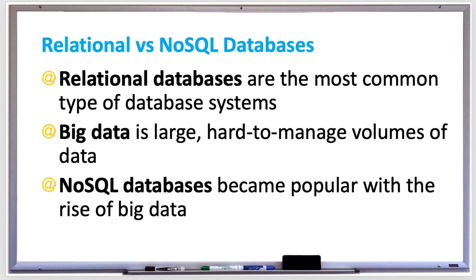Most database systems were originally for-profit commercial software, such as Oracle, which requires expensive licensing. Currently there are open source databases that are really popular, they're free, and there's a community of developers that can inspect, modify, and copy the database without any fee or license. There are many different open source databases that are both relational and NoSQL. Examples of popular open source relational databases include MySQL, SQLite, and Firebase.